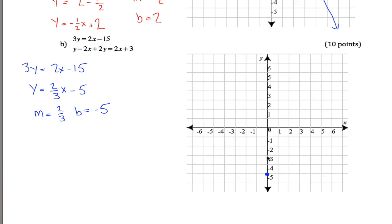And then every time I go up by 2, I'm going to go over by 3. There's another point on my graph, up by 2, over by 3. This line right here.